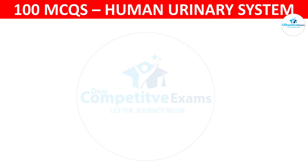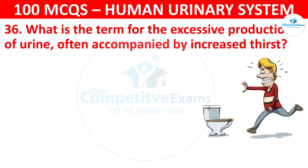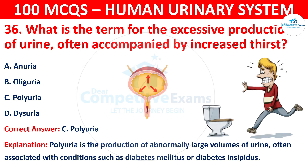Question 36: What is the term for the excessive production of urine, often accompanied by increased thirst? The options are: anuria, oliguria, polyuria, or dysuria. The correct answer is C, that is polyuria. Polyuria is the production of abnormally large volumes of urine, often associated with conditions such as diabetes mellitus or diabetes insipidus.